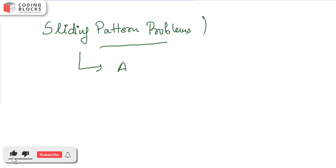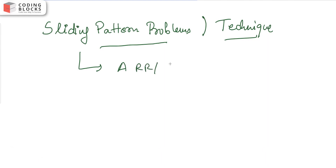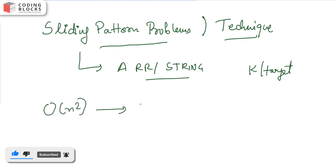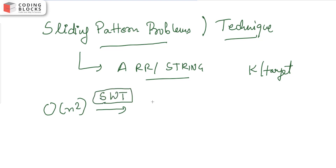The sliding window technique is applicable over arrays and strings. We need to do certain optimization over a target — we find different windows and slide in order to get our required result. The brute force solution has O(n²) time complexity, and with the sliding window technique we can optimize it to linear, or O(n).